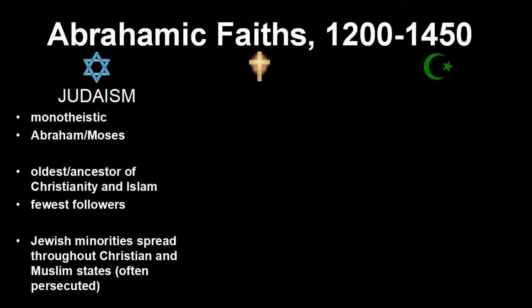In fact, we'll see in Unit 2 that some of these states will actually be replaced by new Muslim states. So let's talk about the core beliefs of Islam — and while we're at it, Judaism and Christianity too. They're all monotheistic, and the one god that they worship is essentially the same. Judaism is the oldest one and the ancestor of the other two, but it also has the least number of followers. In AP World, we need to understand that Jews are generally minorities scattered throughout Christian and Muslim states, sometimes being tolerated and sometimes being persecuted.